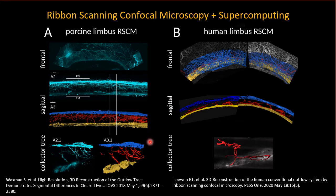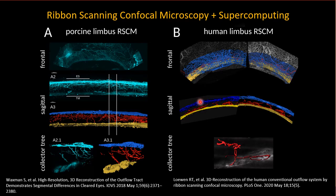One can zoom in to much greater detail because confocal microscopy goes down to subcellular levels. In the human eye, the appearance is somewhat similar, but in the segmentation — yellow being Schlemm's canal and the trabecular meshwork, red being the collector channels, and blue the connecting episcleral veins and further distal outflow vessels — it becomes apparent that the collector channels are much longer, spanning several clock hours, yet equally complex compared to the pig, with branching, peculiar curves and bends.